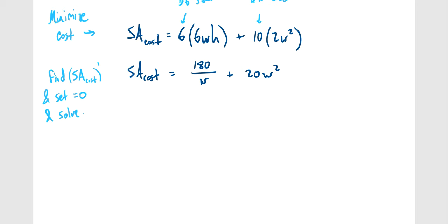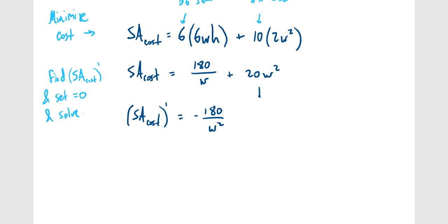Now we apply the first derivative test: find the derivative, set it equal to zero, and solve. The derivative of 180/W — rewritten as 180W⁻¹ — using the power rule gives −180/W². The derivative of 20W² using the power rule gives 40W. So SA' = −180/W² + 40W.